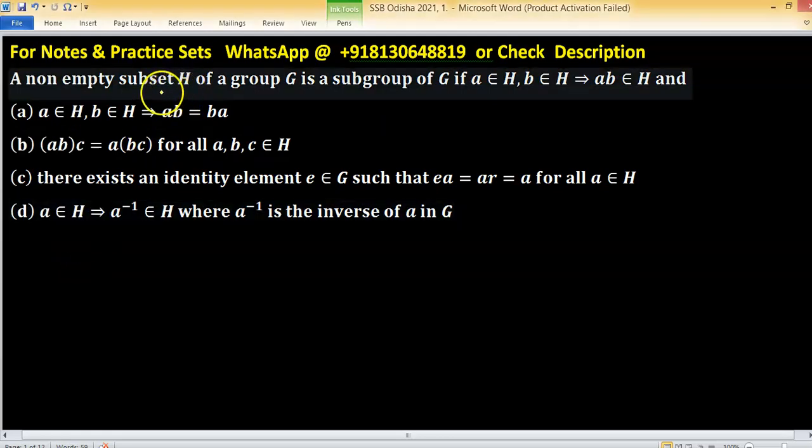In this given problem, H is a subset of group G and A belongs to H and B belongs to H. These A and B are arbitrary elements.